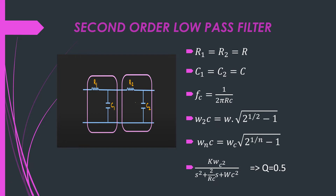When cascading two first order low pass filters, the resulting second order filter will not behave the same as a first order filter. If R1=R2=R and C1=C2=C, then the cutoff frequency fc equals 1/(2π·RC). However, the cutoff frequency of the second order filter will get shifted — specifically, omega_2c will equal omega_c times the square root of (2^(1/2) − 1). For an nth order cascaded filter, the cutoff frequency shifts to omega_c times the square root of (2^(1/n) − 1), meaning the cutoff frequency of the nth order filter gets shifted by this amount.